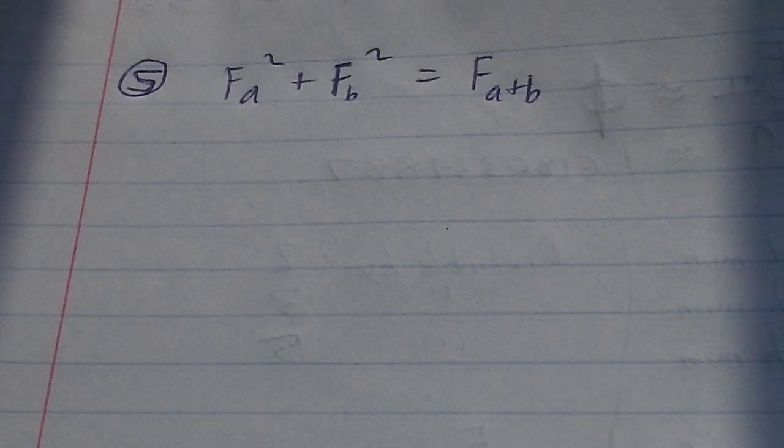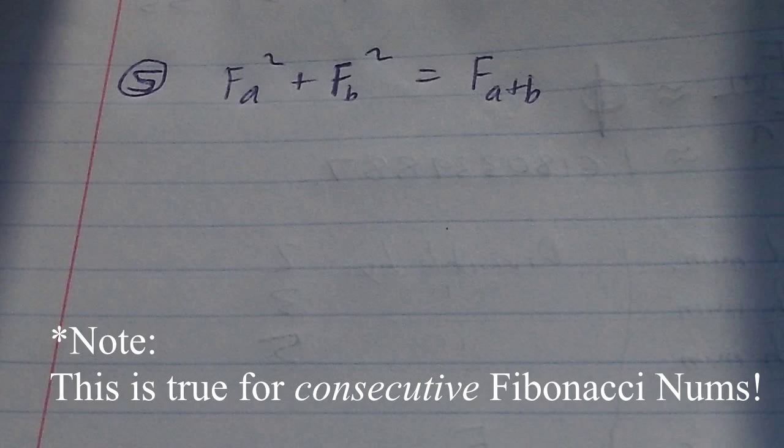Lastly, if we take the sum of the squares of any two Fibonacci numbers, we get another Fibonacci number, indexed by the sum of the first two indices.